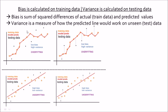Variance is the measure of how my predicted line would work on unseen or test data. When I check my testing data, I see that the model has high variance — there is so much deviation from the testing data relative to the prediction line. Hence, for overfitting we have high variance and low bias because the sum of squared differences on training is very small.